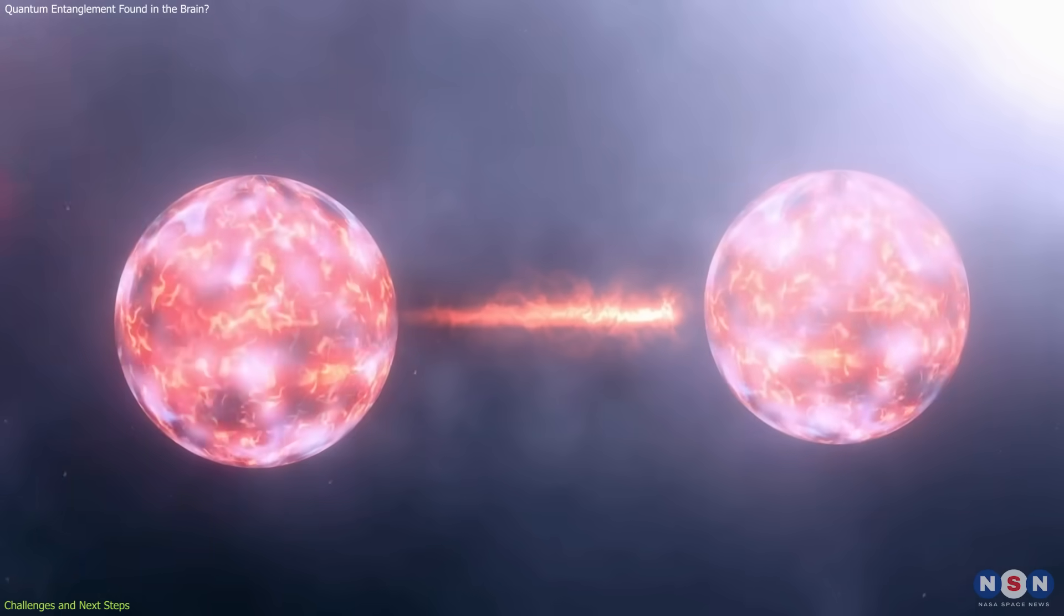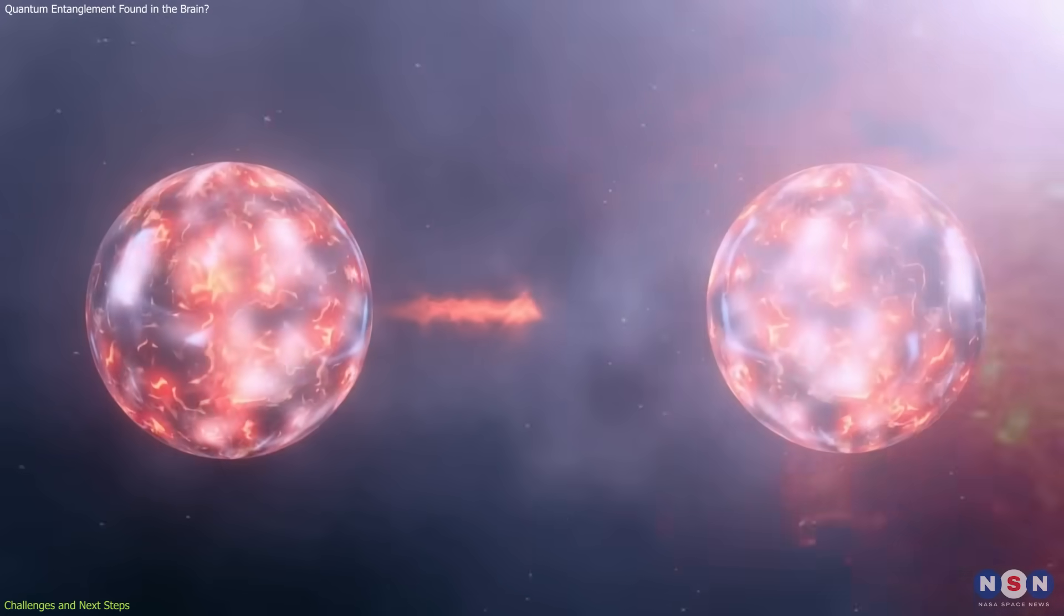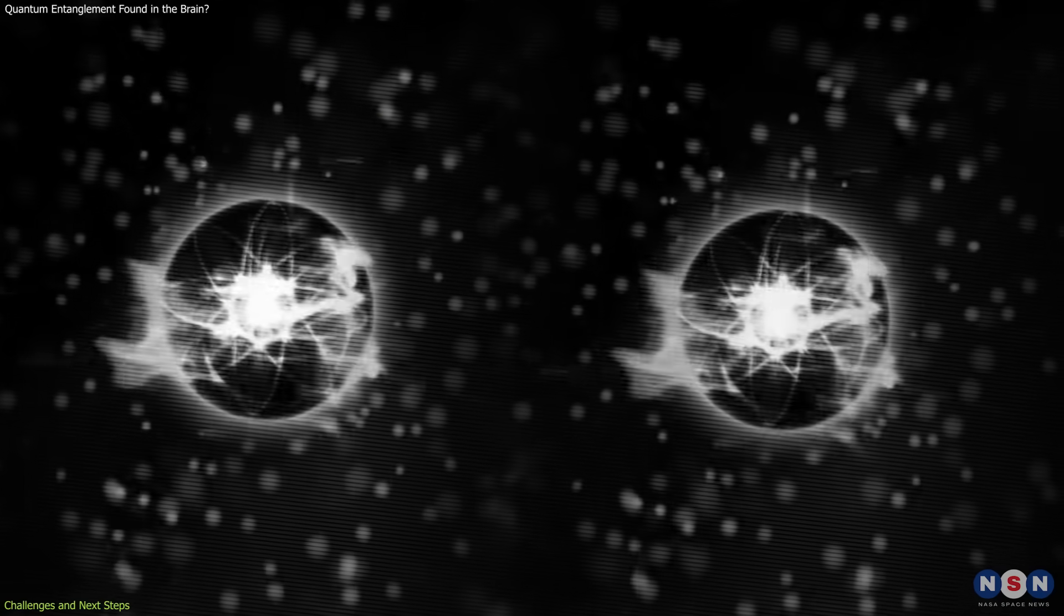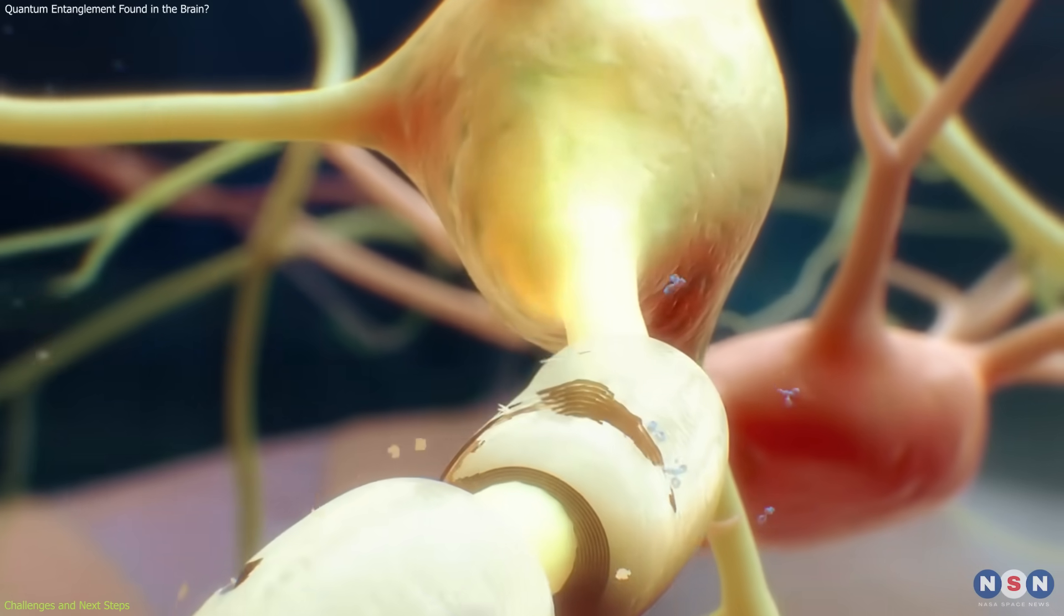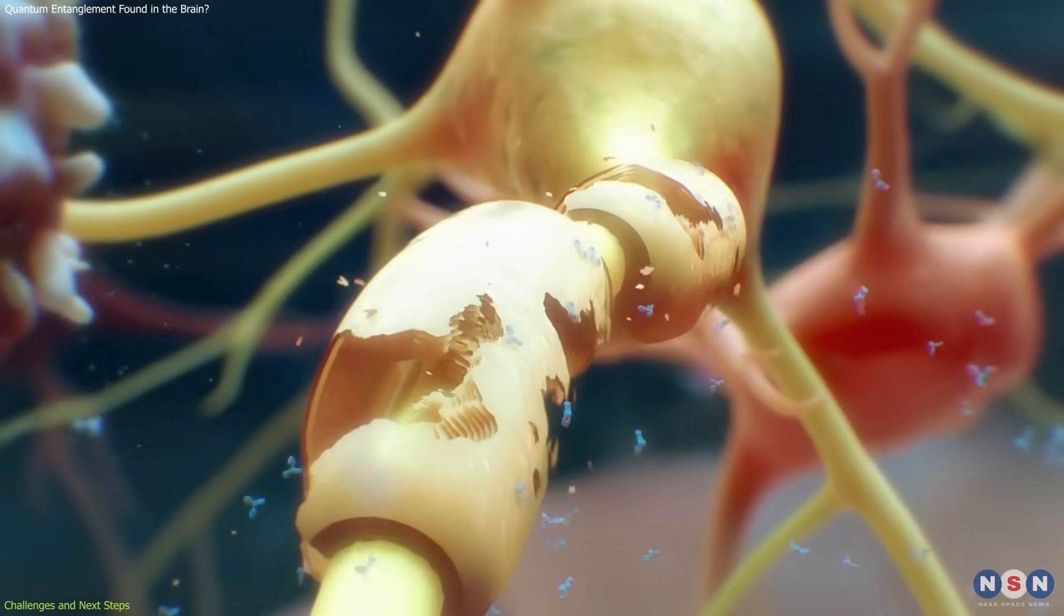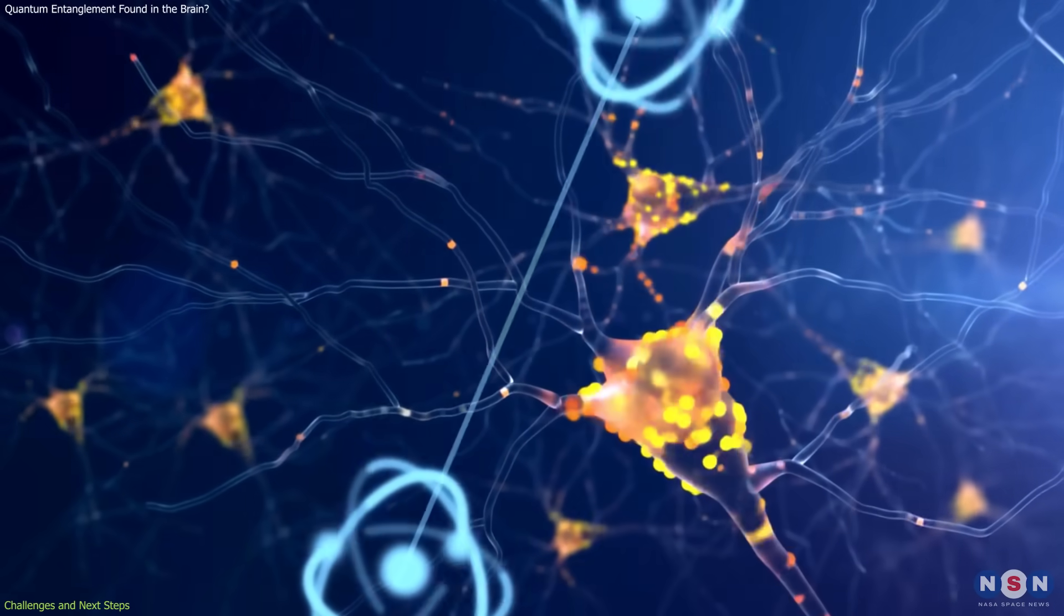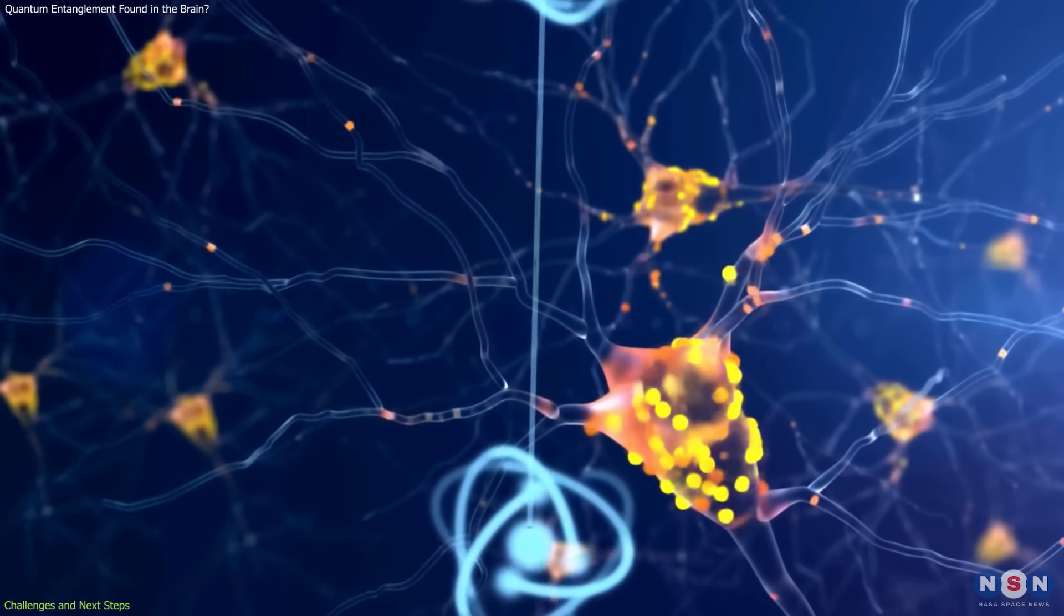Second is the problem of decoherence. Quantum states are known to collapse quickly when interacting with the environment. The authors argue that myelin may help shield entanglement due to its physical properties. But whether it's enough to sustain quantum states long enough to be useful remains an open question.